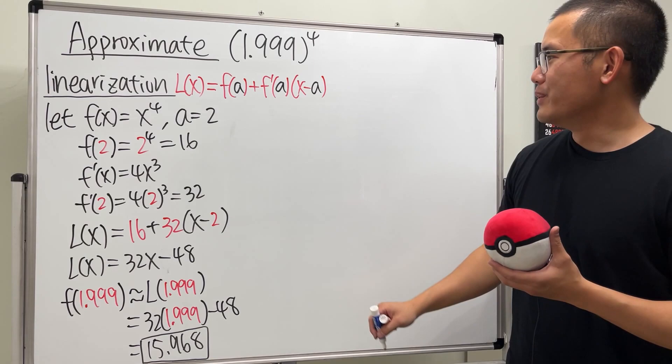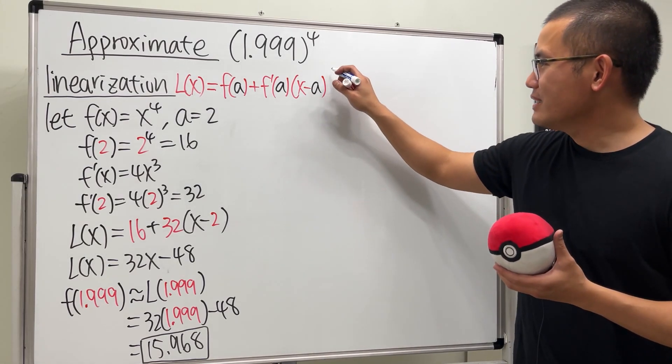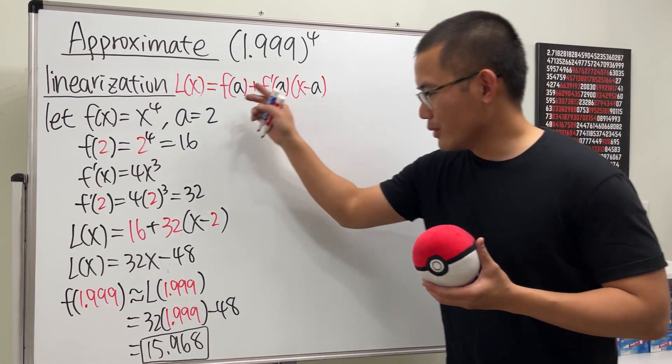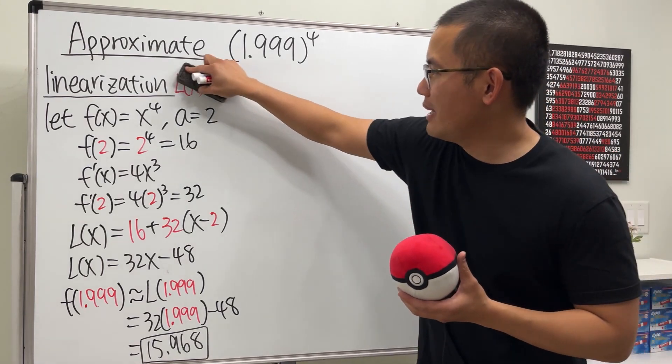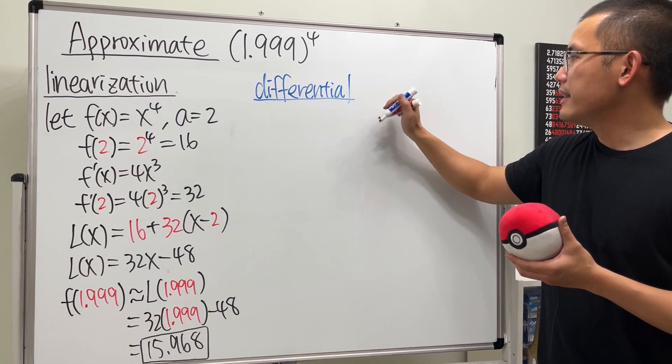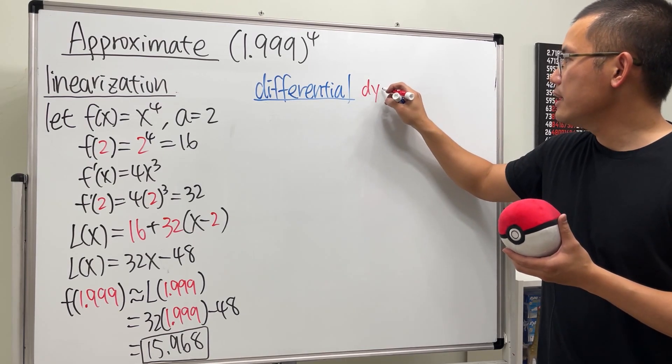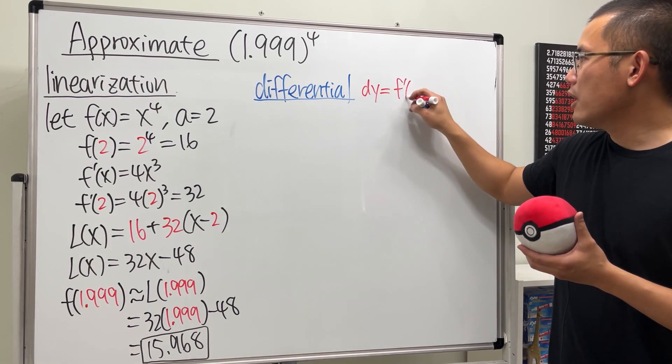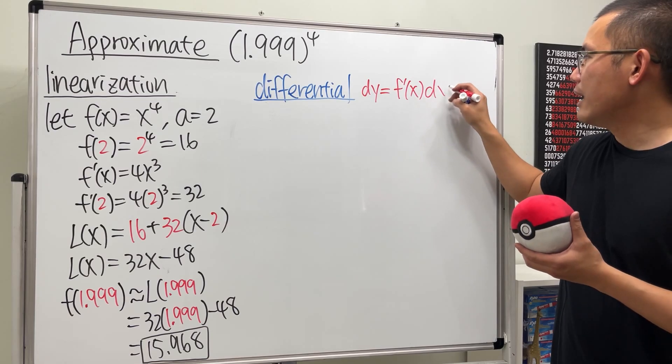That's the way you go about it. The next way is the differential way. I'm going to erase this so I have more space. For the differential, we have the next formula: dy = f'(x)dx.